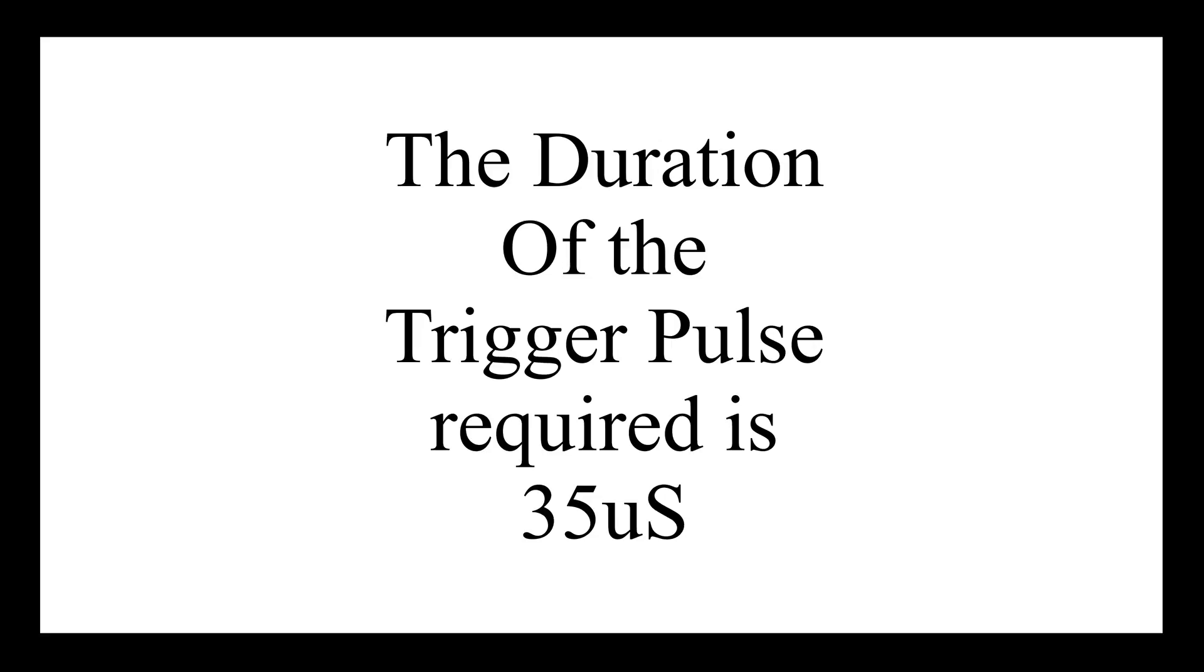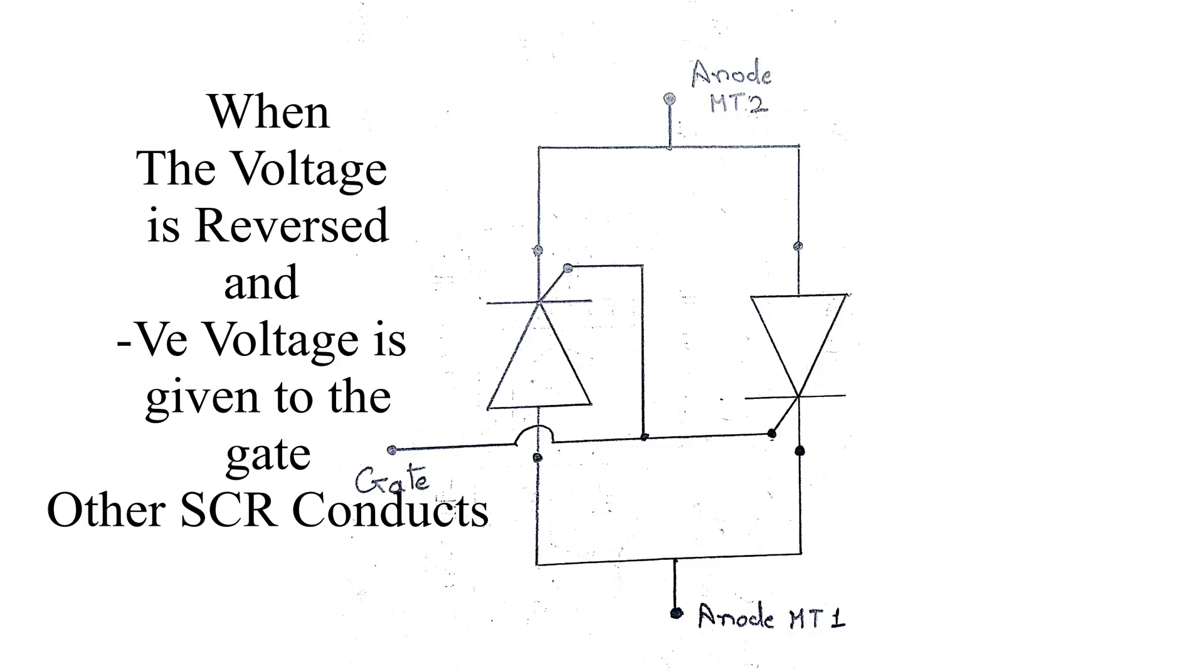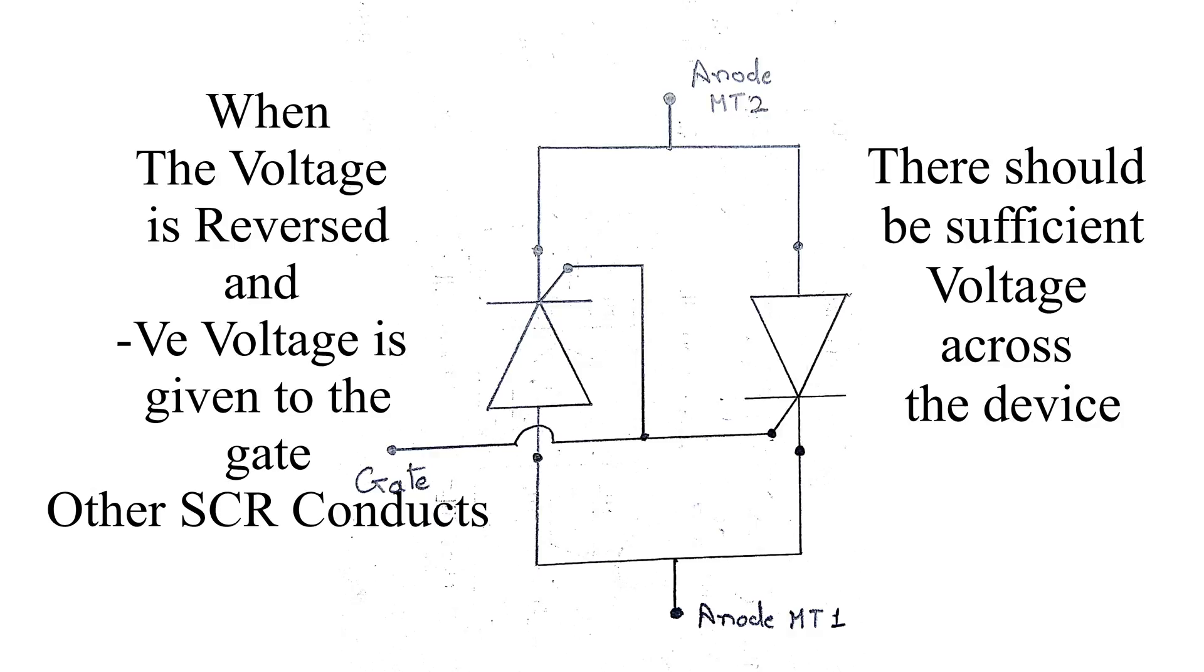Working of TRIAC: when the voltage on MT1 is positive with regard to MT2 and a positive gate voltage is applied, one of the SCRs conducts. When the voltage is reversed and a negative voltage is applied to the gate, the other SCR conducts. This is provided that there is sufficient voltage across the device to enable a minimum holding current to flow.